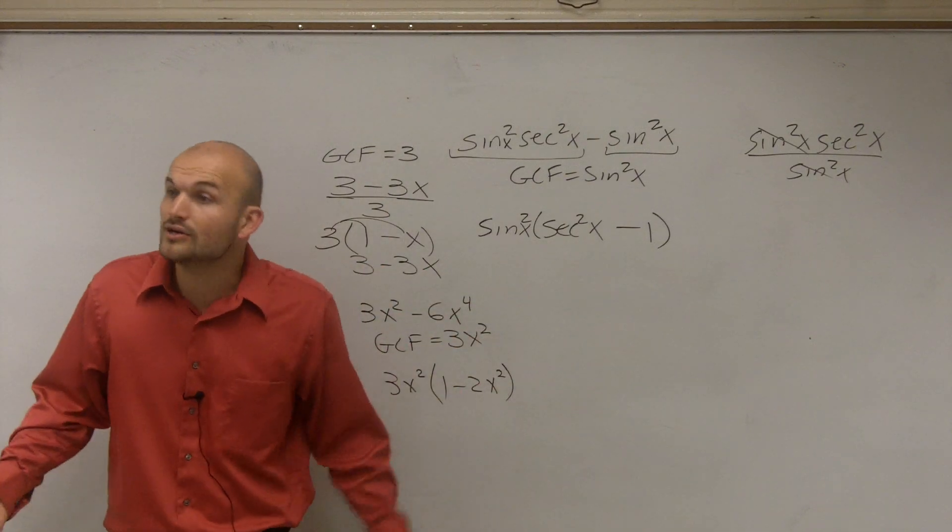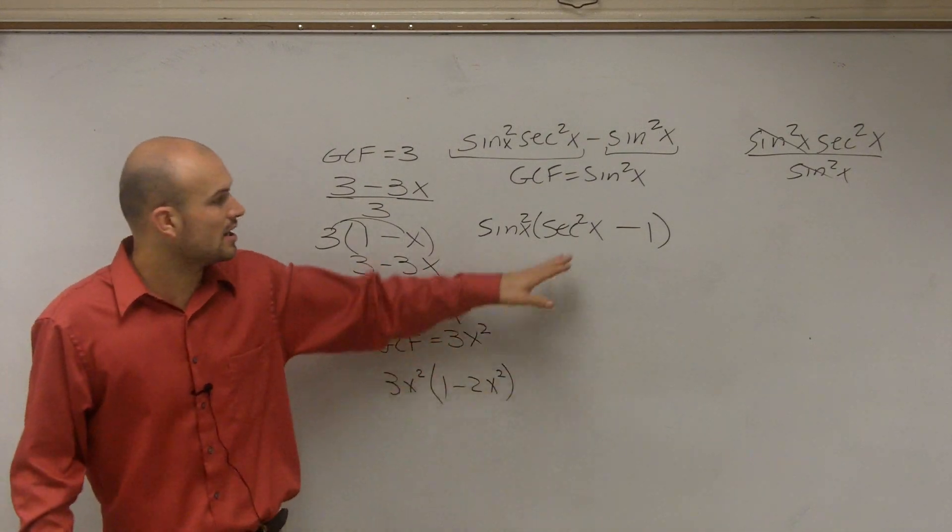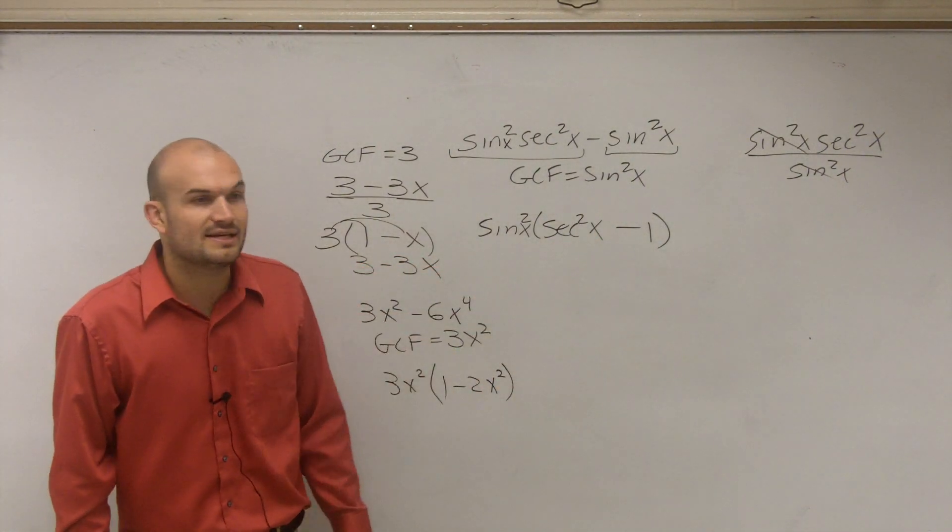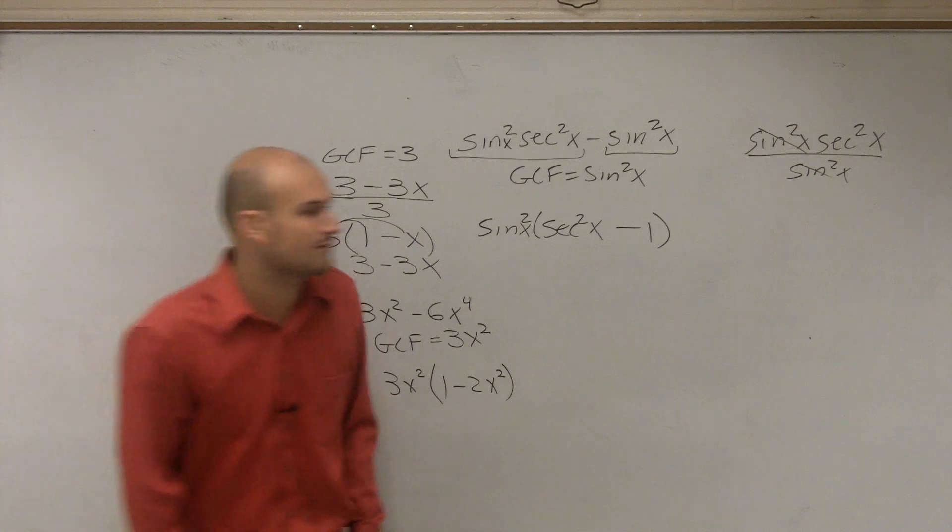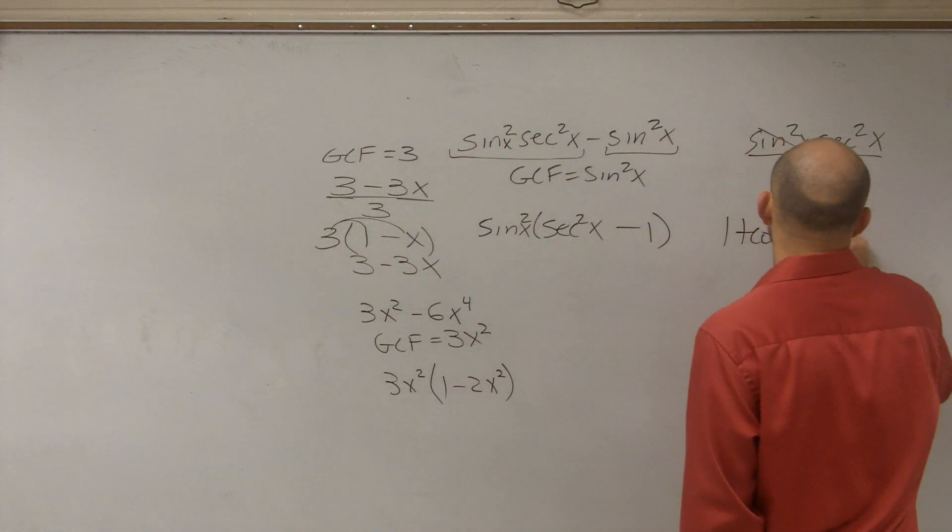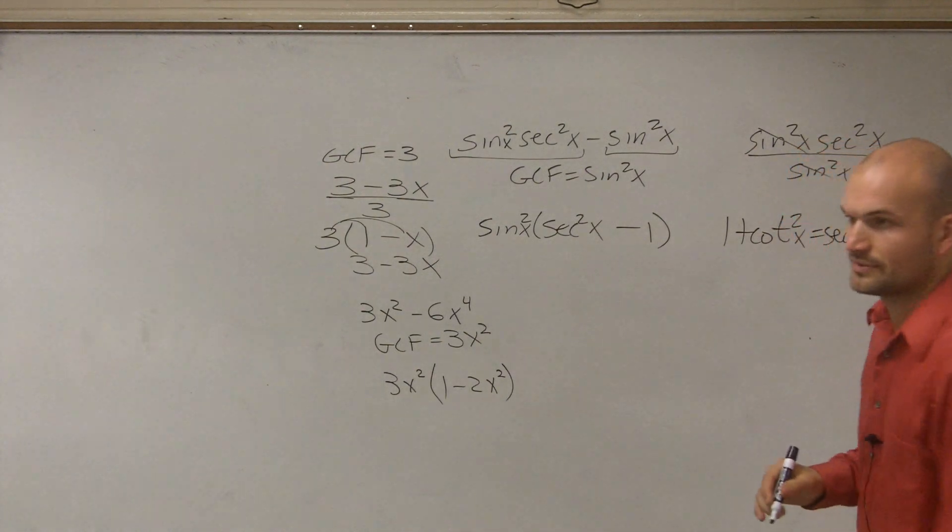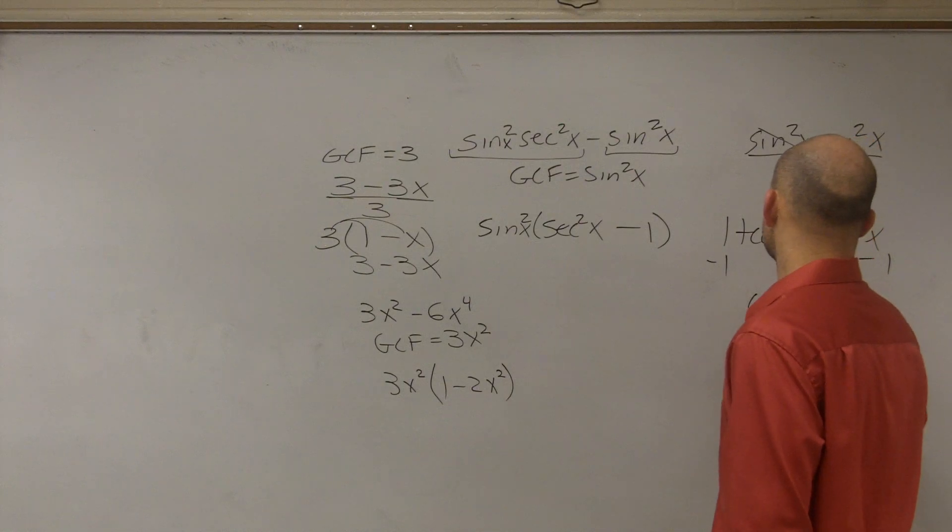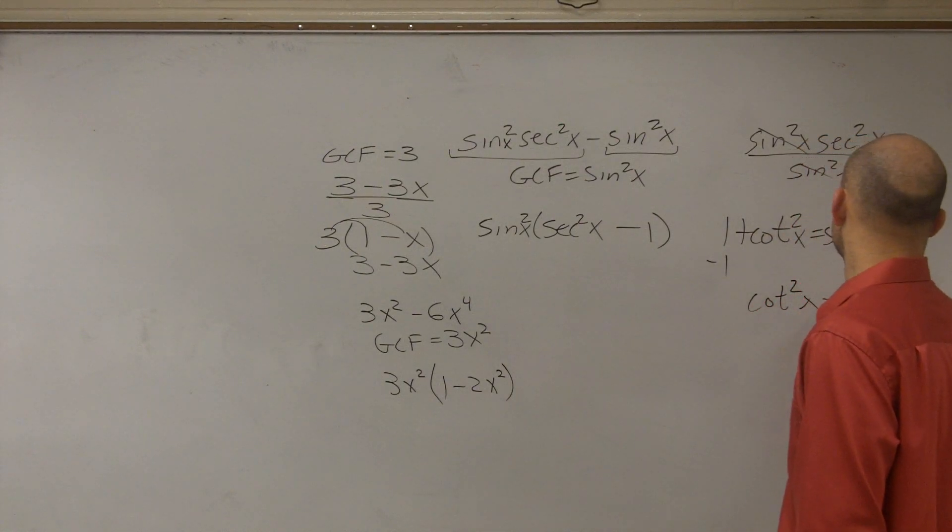Now, is this simplified? Well, we still have some Pythagorean identity squared. So we could say, could we rewrite secant squared of x minus 1 into a different form? Well, we know that 1 plus tangent squared of x equals secant squared of x. So tangent squared of x equals secant squared of x minus 1.